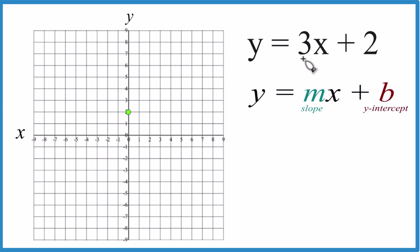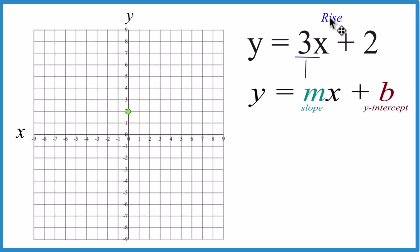For the slope, we have 3m. That's 3. But it's helpful to think of this as 3 over 1. That way you can call the 3 the rise, the 1 is the run, and then you go back to that y-intercept point.